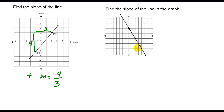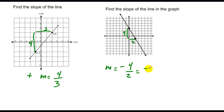Likewise this has a negative slope. I go down a total of one, two, three, four. I go down four, but in this case I'm only going over two. So the slope in this case is negative four over two, or negative two.